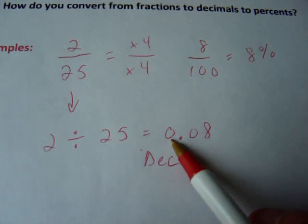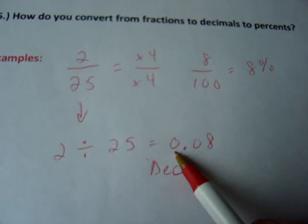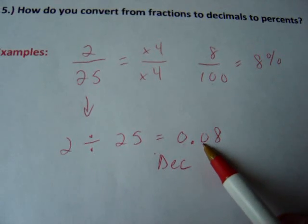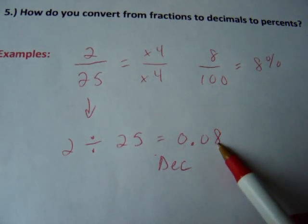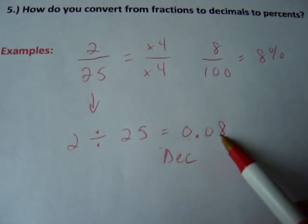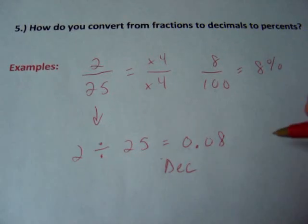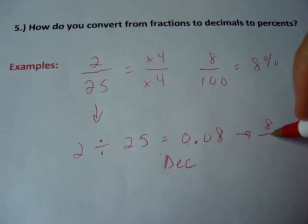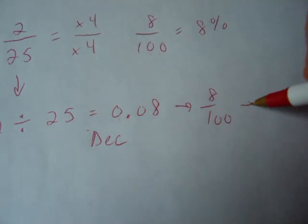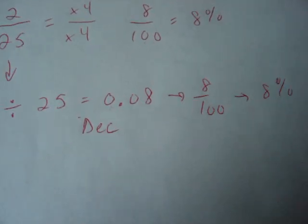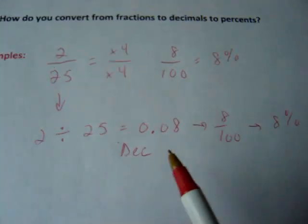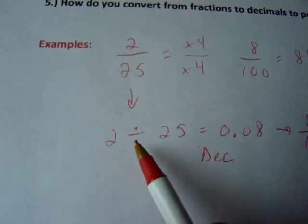Well, the place right here I'm pointing to, this is the ones. You don't have any because this is not a whole. Then you have your decimal point. This is the tenths, and this is the hundredths, which is precisely what you want, because percent means out of 100. So you have no tenths, but you have eight hundredths. So you can rewrite this as eight hundredths, and then again, there's your percent, because it's out of 100. So your answer is eight percent. So you can always divide to get a decimal and then turn it into a percent. You can do top divided by bottom.